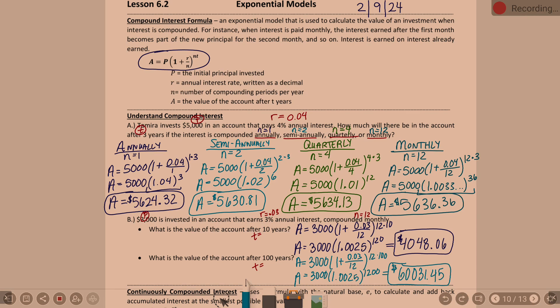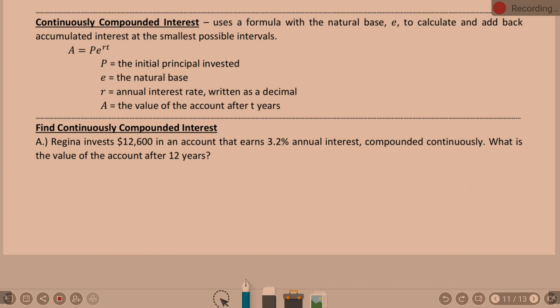Bottom of this page, we have another formula, and that is talking about continuously compounded interest. So, the difference here is the idea of continuously compounded interest is it's not a set time interval. It's just continually compounding. We're talking about the smallest time intervals possible. This uses a formula with the natural base E to calculate and add back accumulated interest at the smallest possible intervals. Our formula is A equals P times E to the RT. Even more importantly, why you need to have a calculator by your side today, because we've got to figure out how to use this whole E thing.